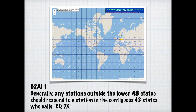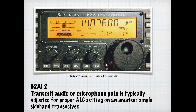DX refers to long-distance communications. Know for the exam that generally any station outside the lower 48 states should respond to the station in the contiguous 48 states who calls CQ DX. So if you hear CQ DX from a local station, they're trying to contact Europe or Asia. When we speak of ALC, we're talking about automatic level control. You need to know for the exam that transmit audio and microphone gain are typically adjusted by proper ALC settings in an amateur radio single sideband transceiver.